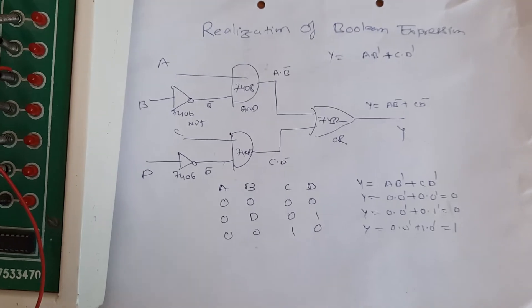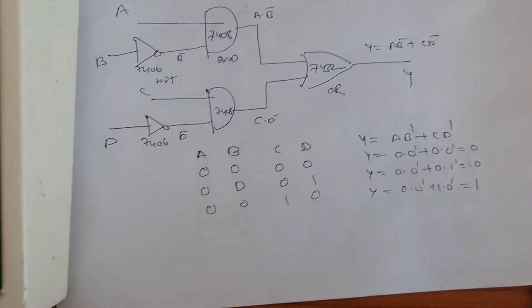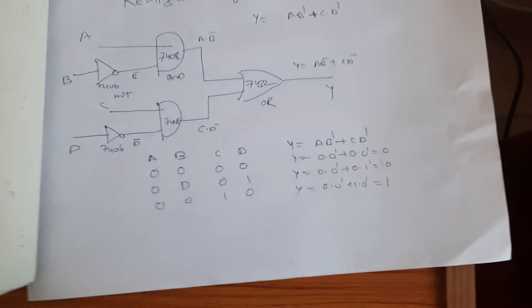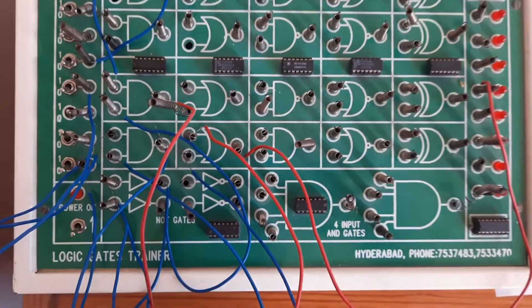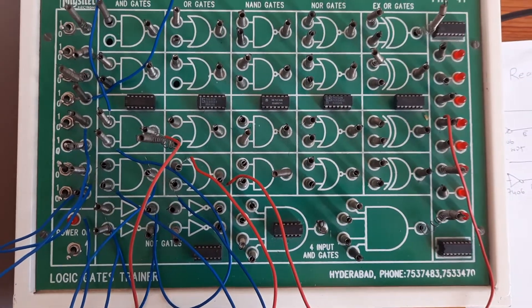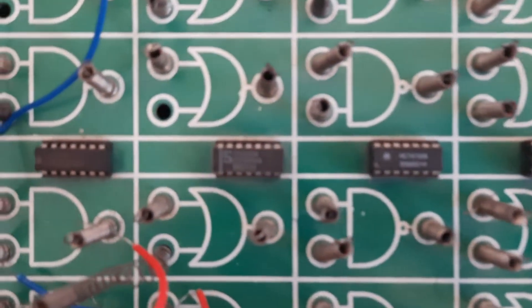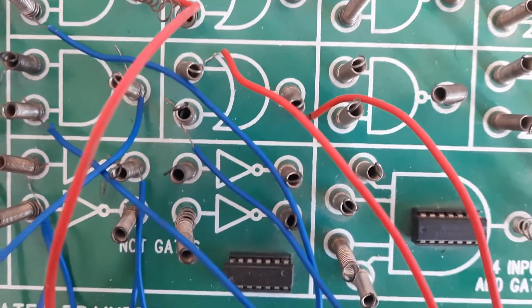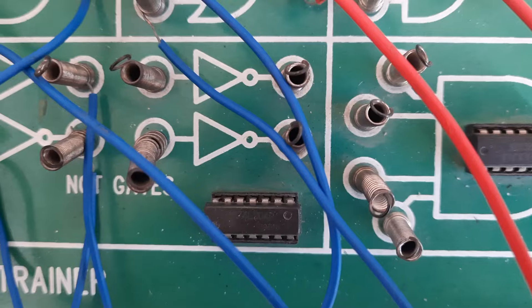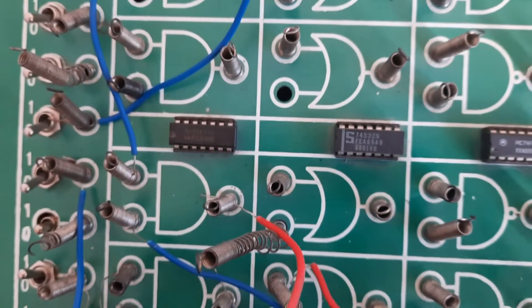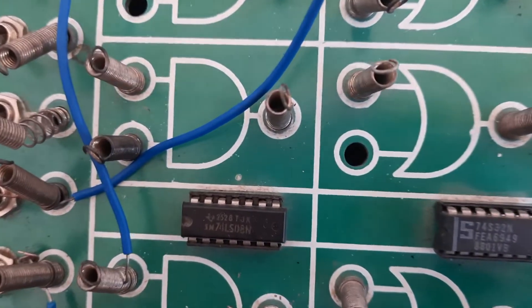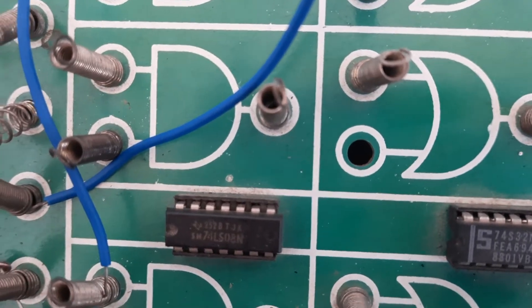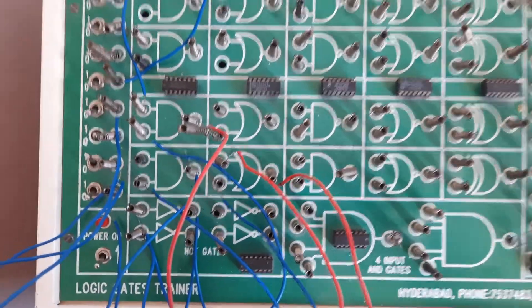We will realize this and verify from the truth tables using hardware kits. The hardware kit is called a Logic Gate Trainer. Here we can see we are having different ICs — AND gate and inverter ICs. The IC number is mentioned on the kit. Now what we will do is make the arrangement based on the circuit.